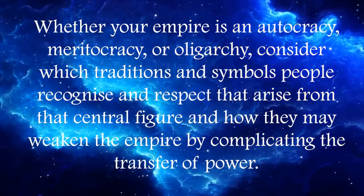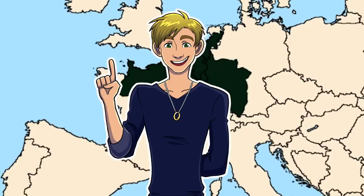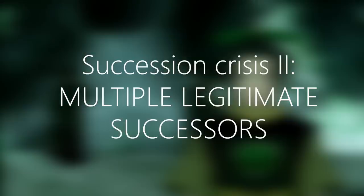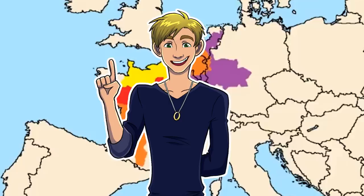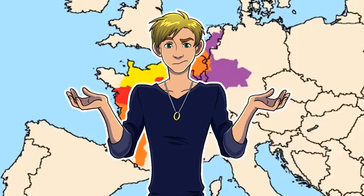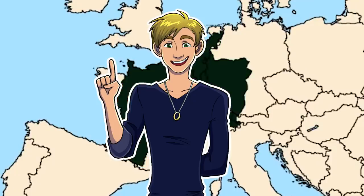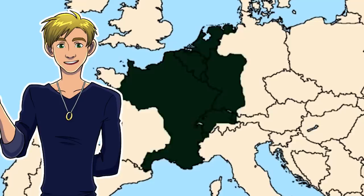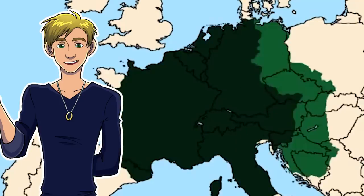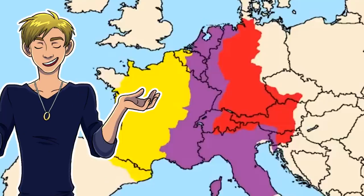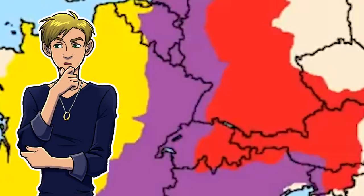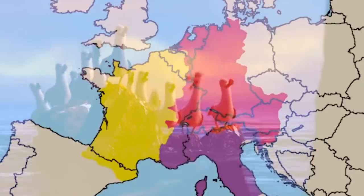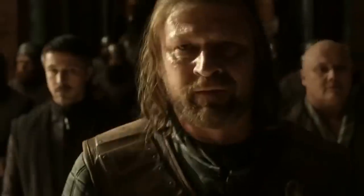Another kind of succession crisis is where the empire purposefully divides itself amongst its successors. The best historical example is the Carolingian Empire — Louis the Pious ended up splitting his empire, and multiple people felt entitled to that mantle of authority. The sliver of land between what became France and Germany was immediately contested, and the whole thing collapsed from infighting.